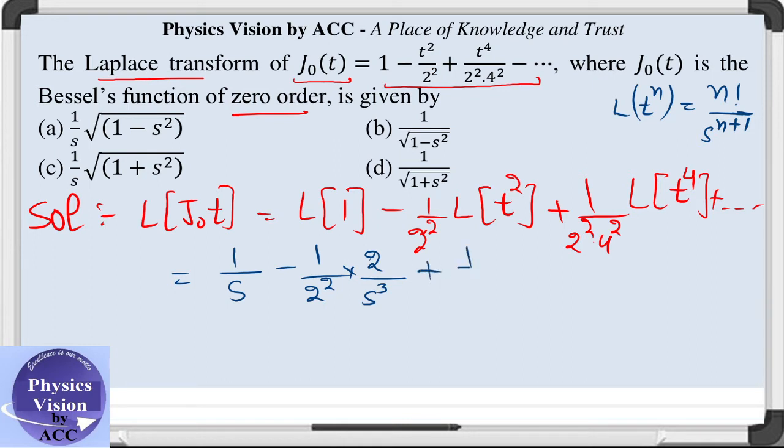So the next term will be 1 by 2 square into 4 square. This will be 4 factorial divided by s raised to the power 5.